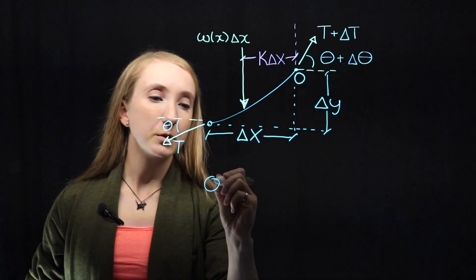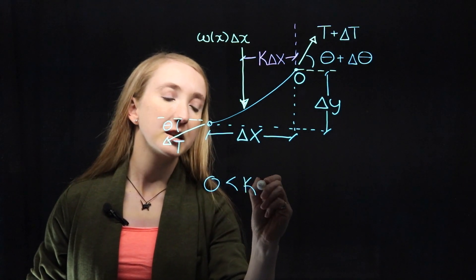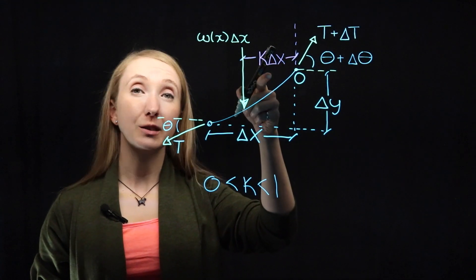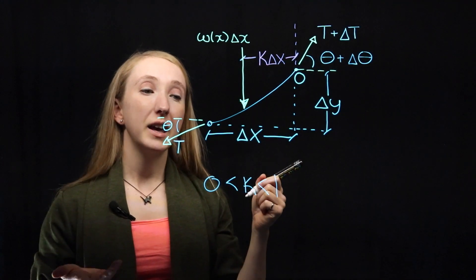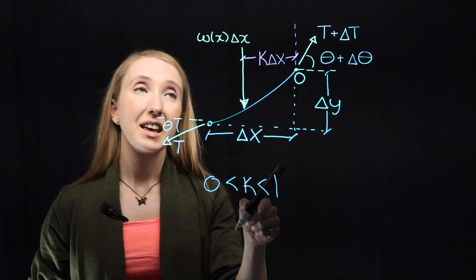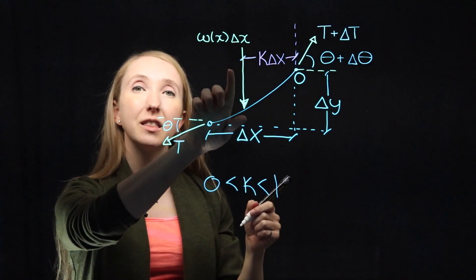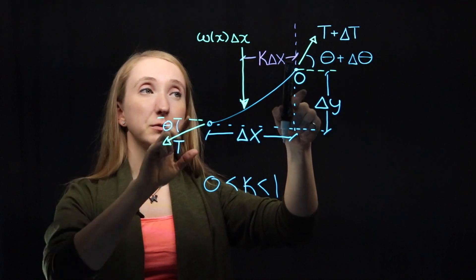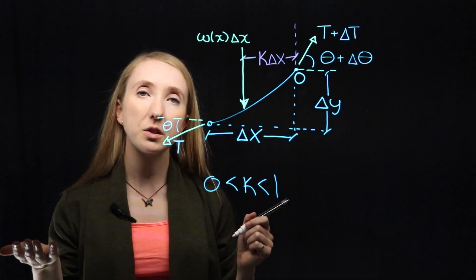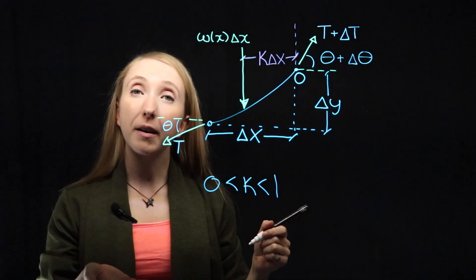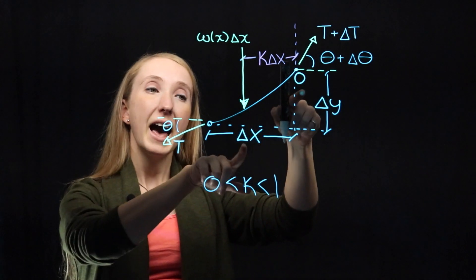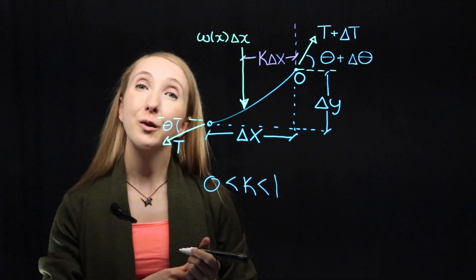That load is located at a point K times delta X from the origin of our segment. K is a number between 0 and 1, which means that this is a fractional distance. So if K were equal to 1, that means that the total load on this segment is acting at a full distance of delta X from our origin. But if K were equal to like 0.5, then our total load would be acting at a distance half of delta X from our origin.